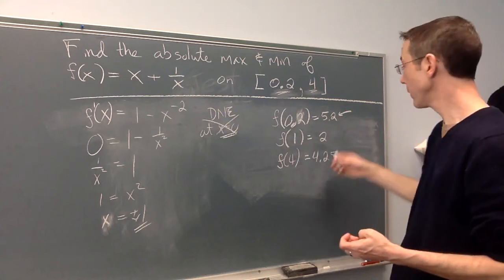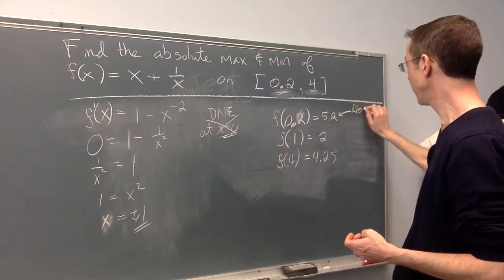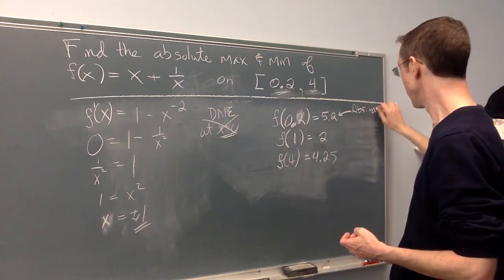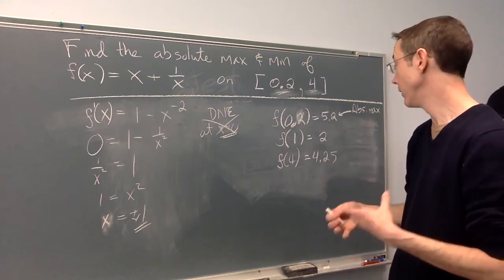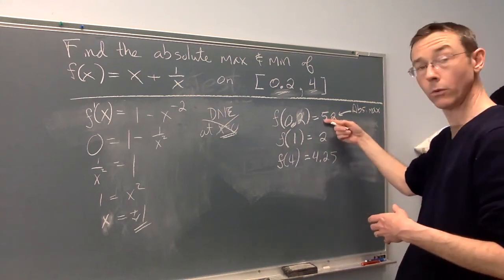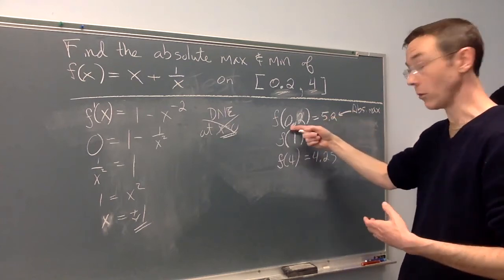This is the biggest of the three. This is going to be the absolute max. The way we say it is the absolute maximum value of this function on the interval is 5.2. It occurs at x = 0.2.